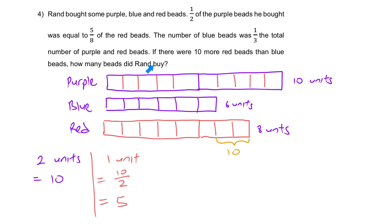How many beads did Ren buy? So we can move on to the answer. We can see in total, there are 10, 6, 8, which is 24 units. Number of beads Ren bought. So 1 unit is 5. We're going to multiply it by the total, 24. And that will give you the answer of 120.